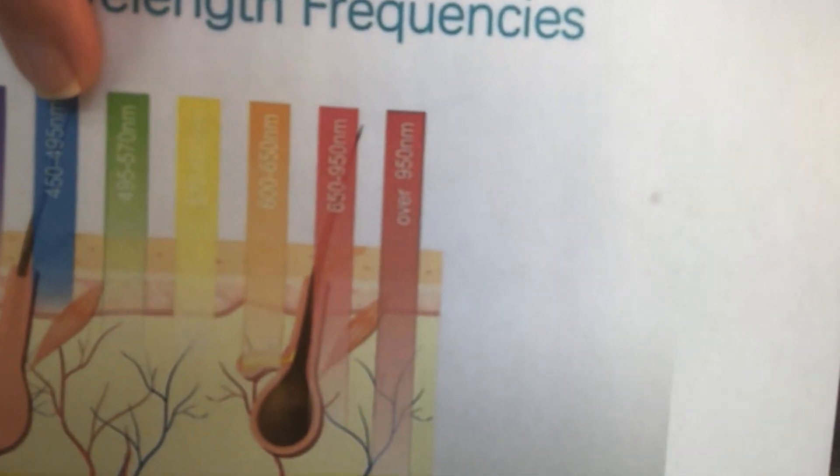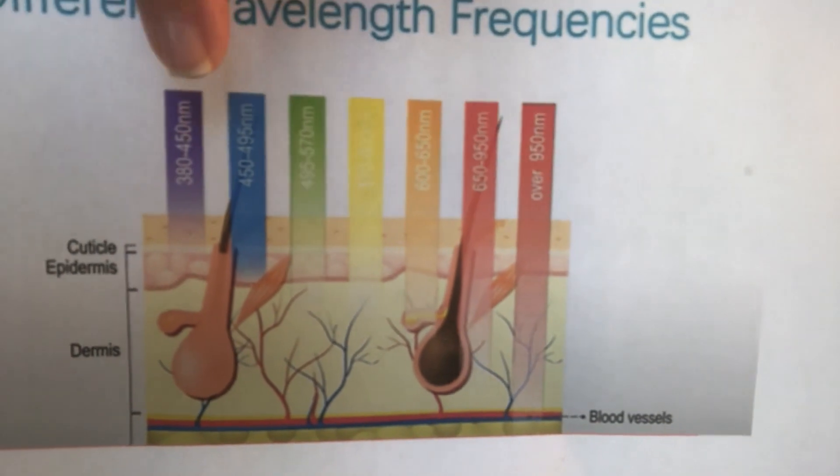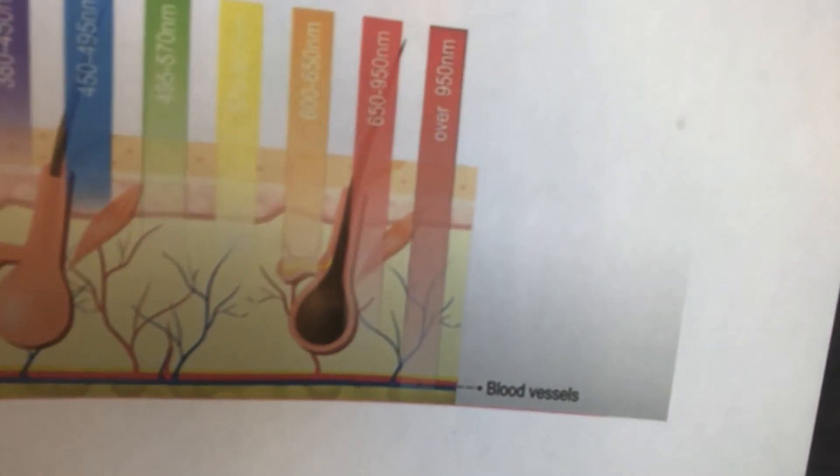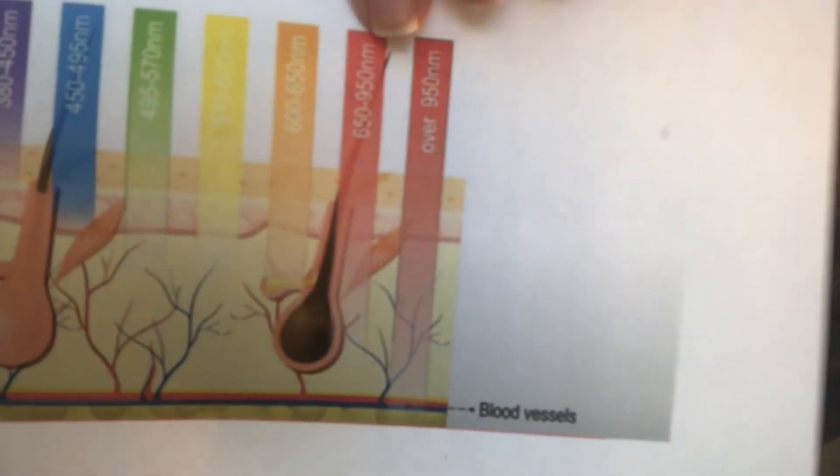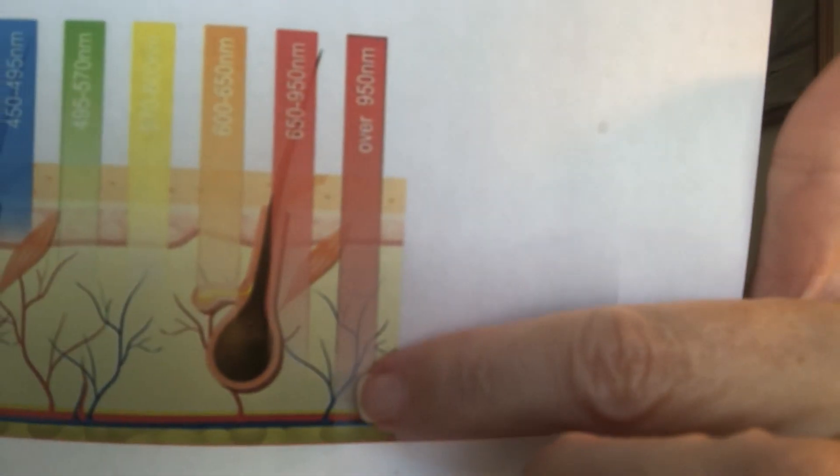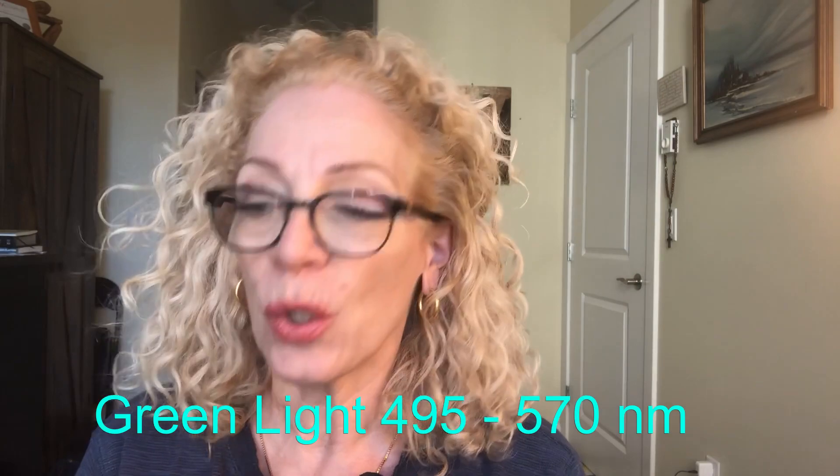To recap: the blue LED light is a shorter wavelength that works more on the surface of the skin, while the red LED light goes deeper. The next wavelength, which is not used as much but has so many benefits, is the green light. The green light calms the skin, balances the skin tone, and breaks down the unevenness of pigmentation production — great for hyperpigmentation, age spots, uneven tone, chloasma, and melasma.